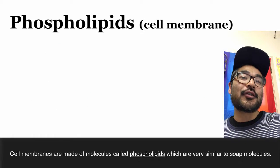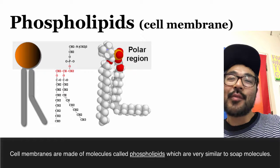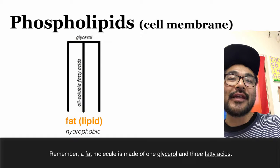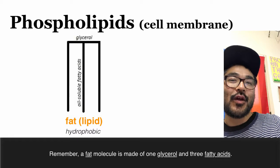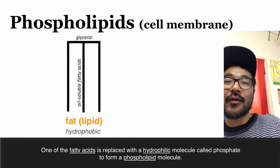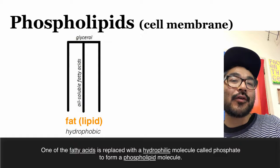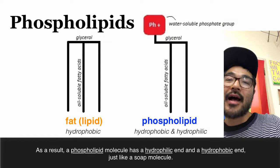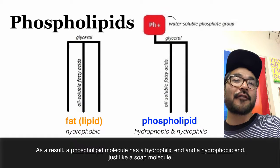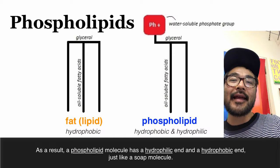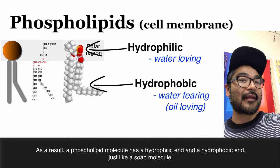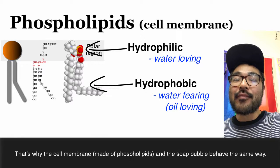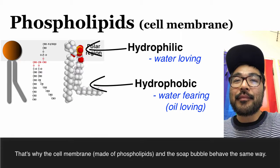Cell membranes are made of molecules called phospholipids, which are very similar to soap molecules. A fat molecule is made of glycerol and three fatty acids. One of the fatty acids is replaced with a hydrophilic molecule called phosphate to form a phospholipid molecule. As a result, a phospholipid molecule has a hydrophilic end and a hydrophobic end, just like a soap molecule. That's why the cell membrane and the soap bubble behave the same way.